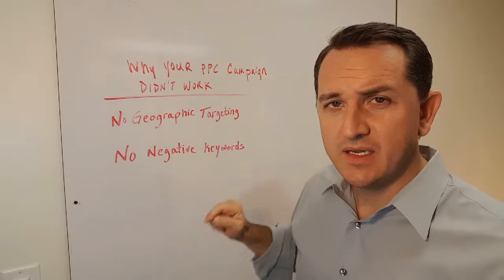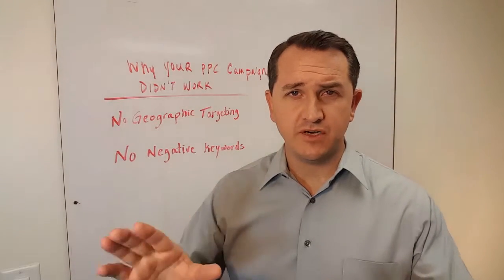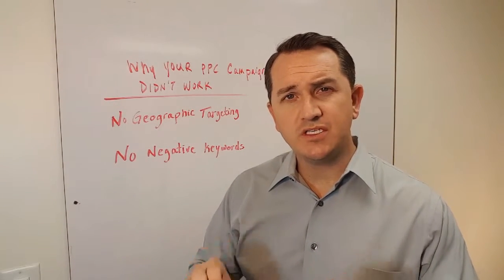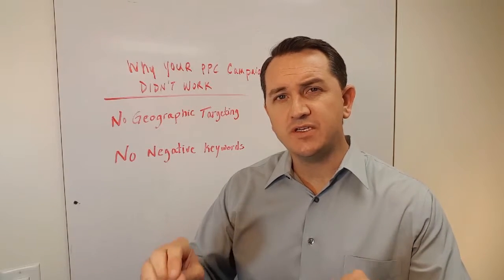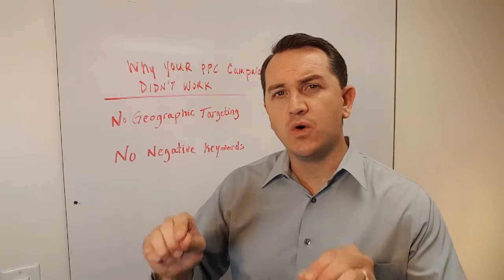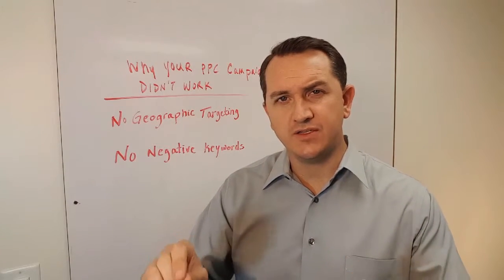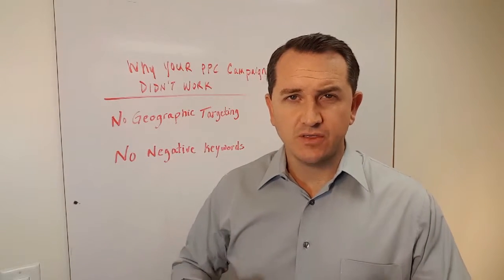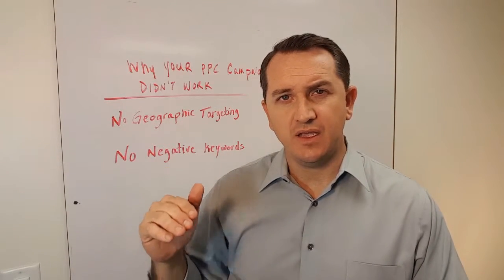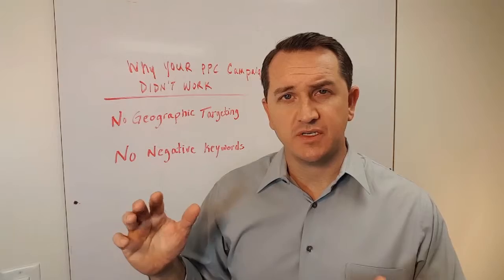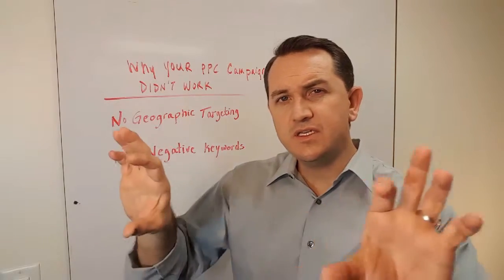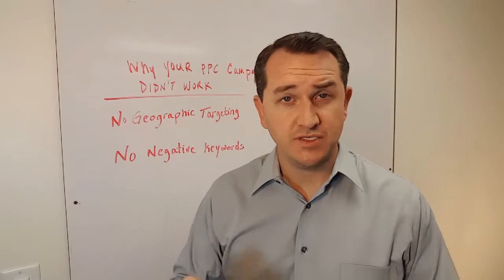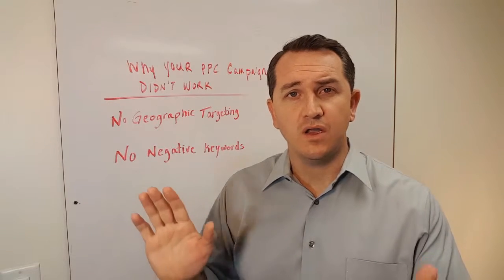Let's first talk about geographic targeting. In a pay-per-click campaign, you can specify geographically the regions where your ads will appear in search engine results. By default, whenever you set up a campaign in a pay-per-click system, the default region is all of the United States.